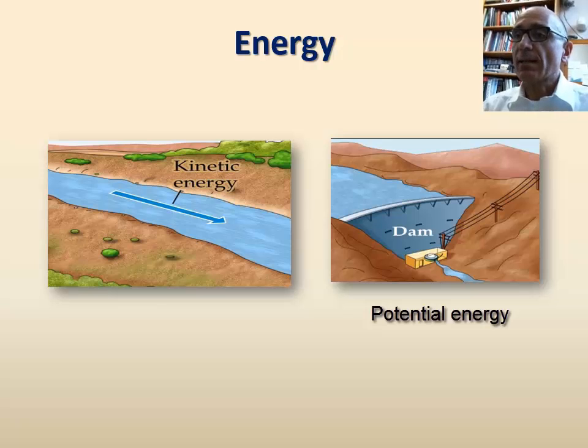From this analogy, we can see that potential energy can be converted to kinetic energy. By allowing water to flow from a dam, energy is converted from potential to kinetic energy. It's the kinetic energy here that does the work.